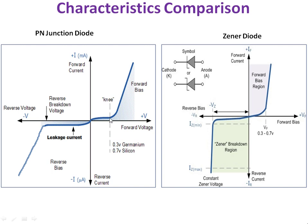Look at the characteristics. During the forward bias condition, both diodes behave the same. But in reverse bias condition, the current flowing through the PN junction is in the order of microamperes, whereas here it is in the order of milliamperes. And the breakdown voltage of a PN junction may be 50 volts, 100 volts, 150 volts, and may go up to 1000 volts.